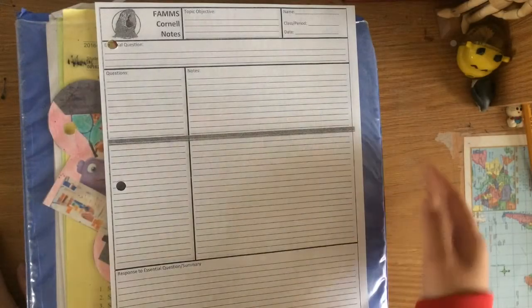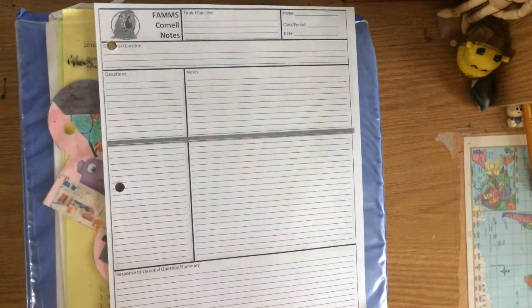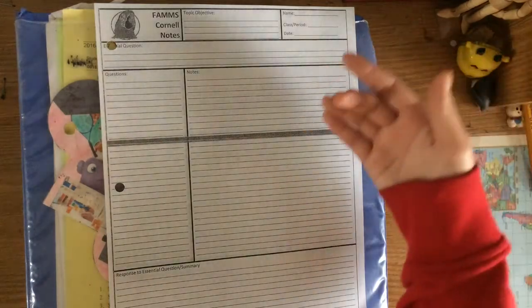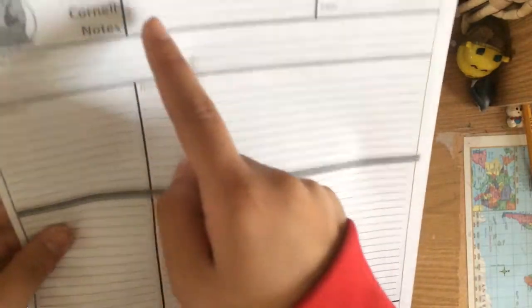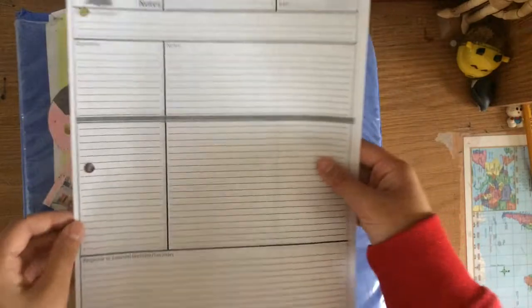The next part of a binder check are the notes. Your teacher will give you a number of notes that you will have to complete in the week to show your tutors for the binder check. Notes include a topic, an essential question, notes, questions about the notes, and then a summary based off of your notes.